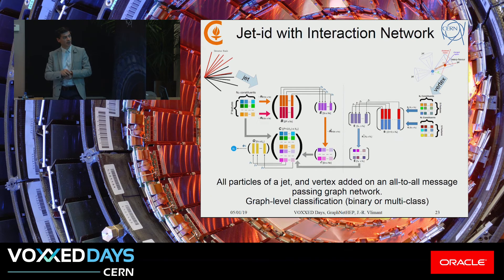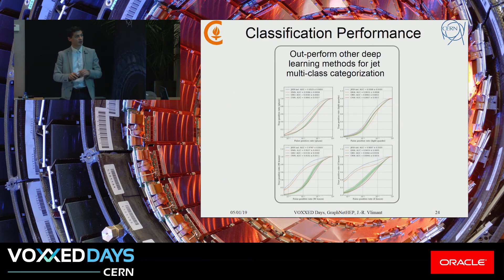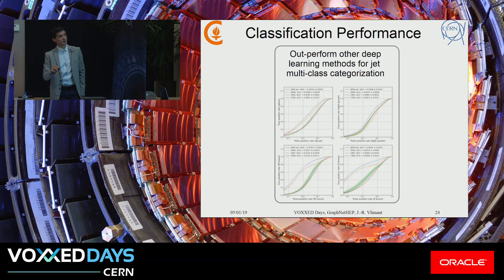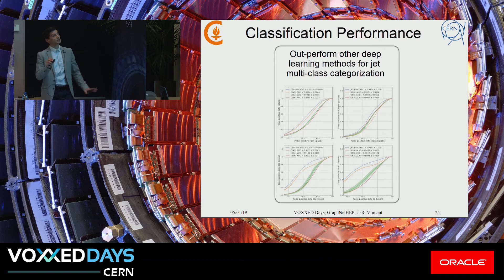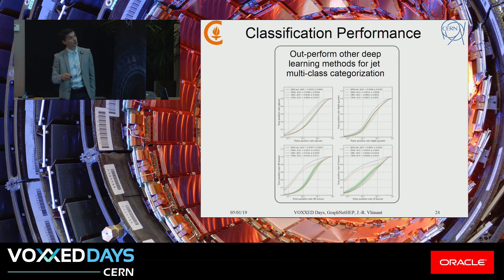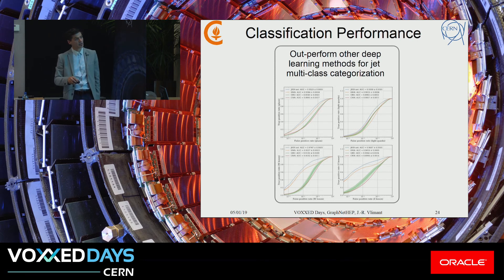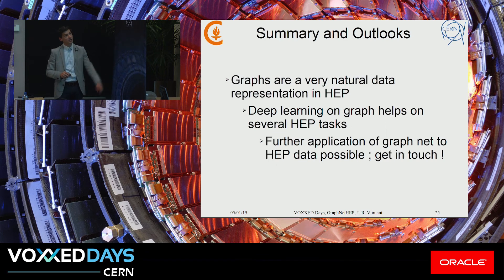This is graph-level classification, binary or multi-class. We have a multi-class classification where you can classify gluons, light quarks, W bosons, Z bosons, and a stop quark. Then we benchmark against image-based processing, sequence-based processing, and deep learning approaches using all jet features. The graph network approach, labeled JediNet, shown here in blue, outperforms everything on this benchmark. So this is a very promising approach and application of graph networks.